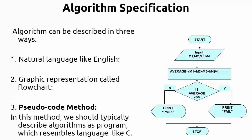The third and most feasible method is the pseudo code method. In this method we describe algorithms as a program that resembles a language like C. Since we ultimately want to implement the algorithm as a program, writing it in a program-like sequence of steps makes implementation easier. In this entire subject we will follow the pseudo code method only.